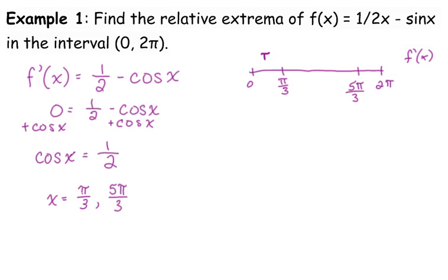Pi over six — between zero and pi over three. Why not one? Yeah, but do you know what the value of the cosine of one is? What's an easy value between pi over three and five pi over three? Pi. And then between five pi over three and two pi, that would be eleven pi over six.